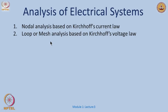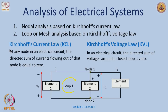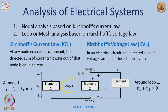Kirchhoff's current law says that at any node, the directed sum of currents flowing out of that node is equal to zero. Similarly, the sum of voltages across a closed loop is always zero — that is what Kirchhoff's voltage law tells us. Looking at a simple circuit: I₁ + I₂ + I₃ = 0 at a node, and for a loop V₁ + V₂ = 0, meaning V₁ = −V₂.